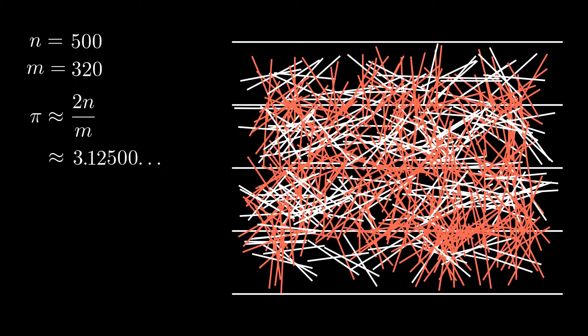Admittedly, this method is pretty inefficient for computing pi. With our 500 needles, we barely scrape by with just two digits. But how does this even work in the first place? How could dropping needles on a sheet of paper give us pi?